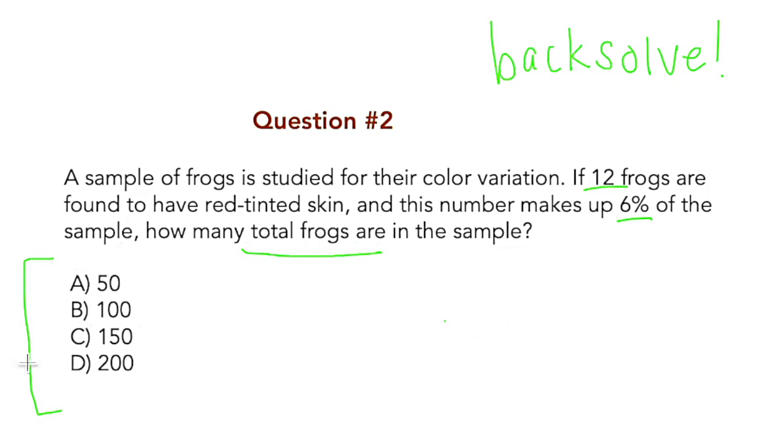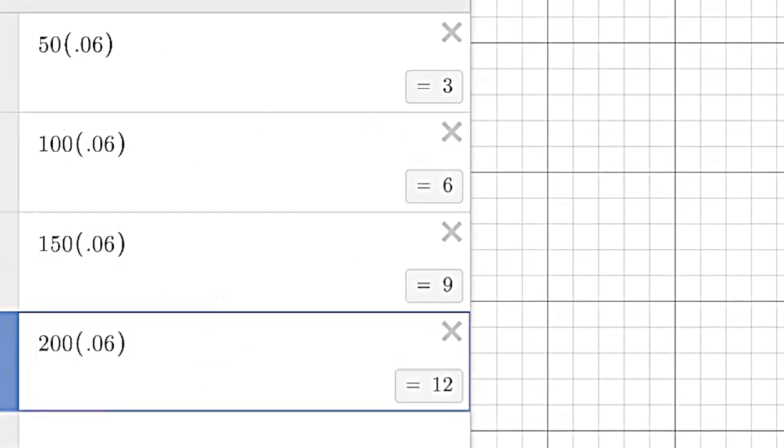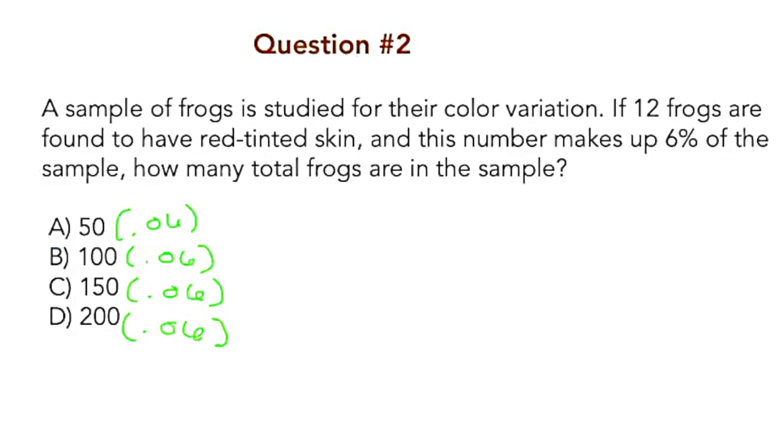We could jump through some hoops using this 12 and 6% to try to figure out a total number of frogs, but we don't have to because we're given our answer choices. So all we have to do is multiply these by 6%, which is 0.06 as a decimal, and see which one gets us to 12. So I put in these four answers, and you can clearly see that obviously 200 is going to get us to the 12. And there we go. Use your answers and save yourself a lot of headache.